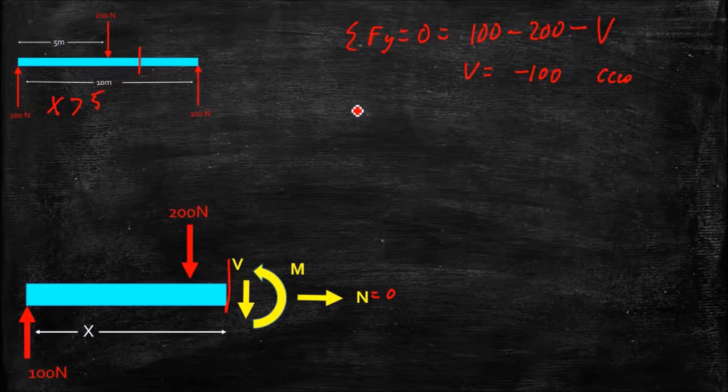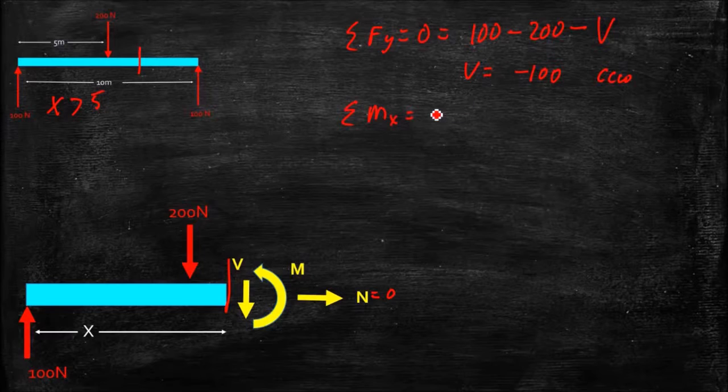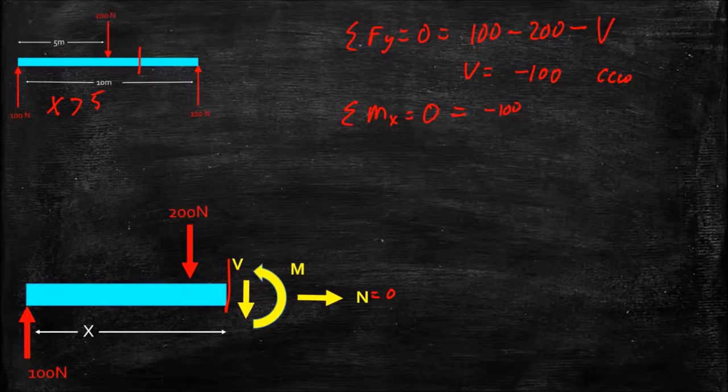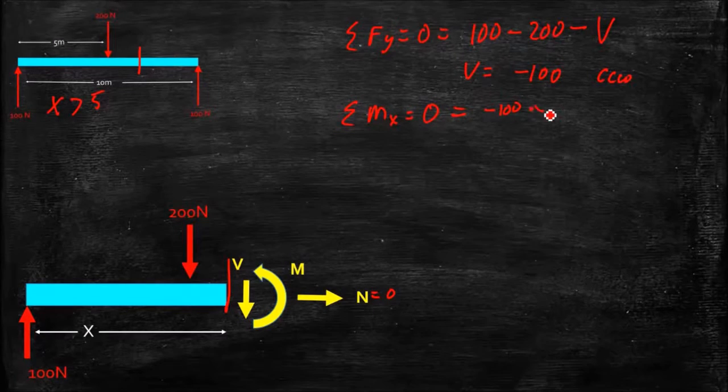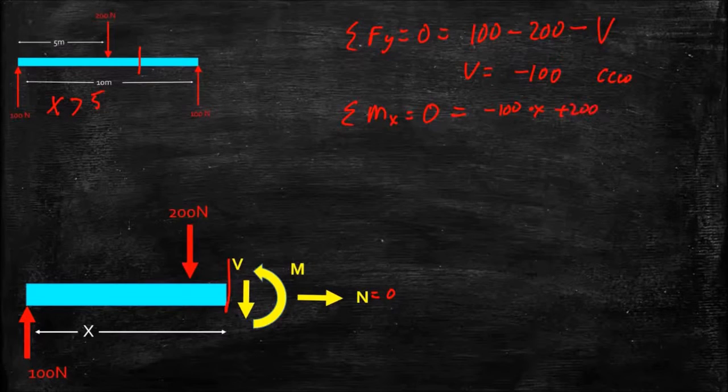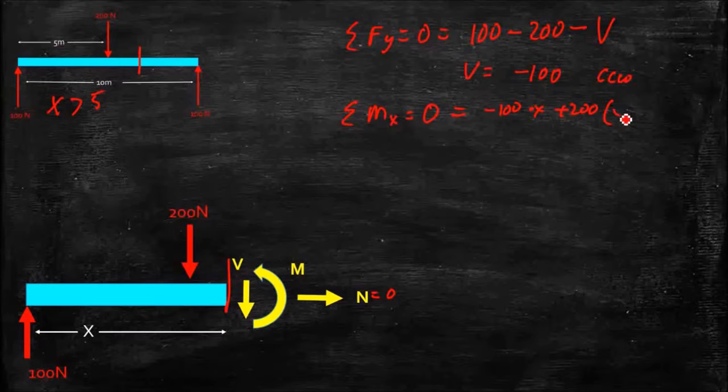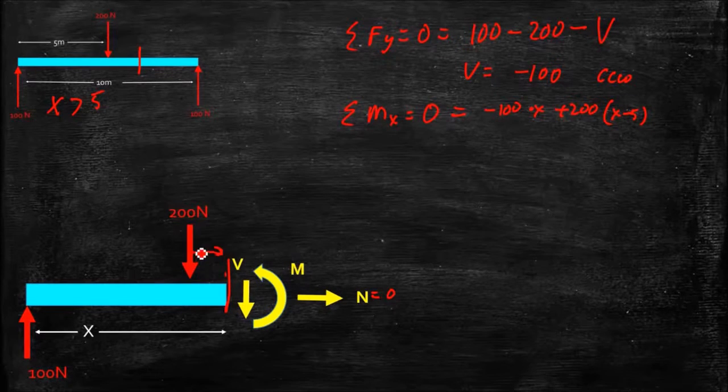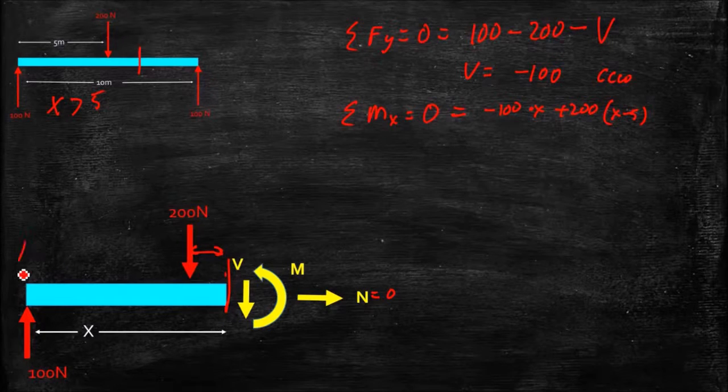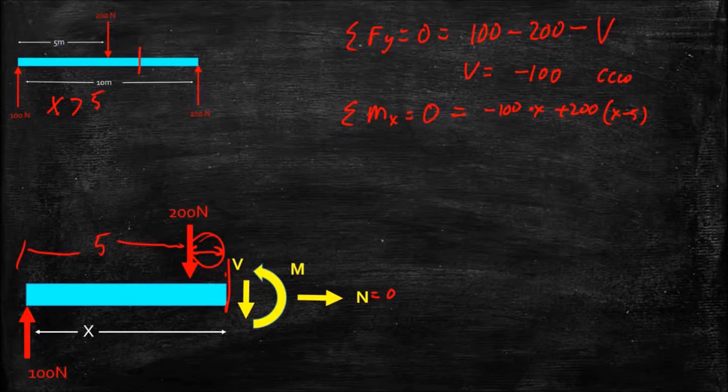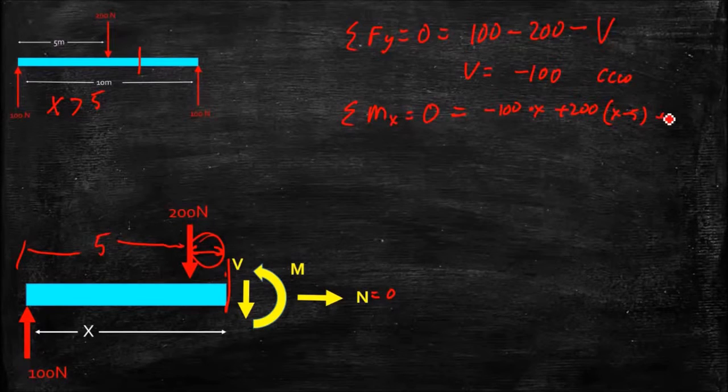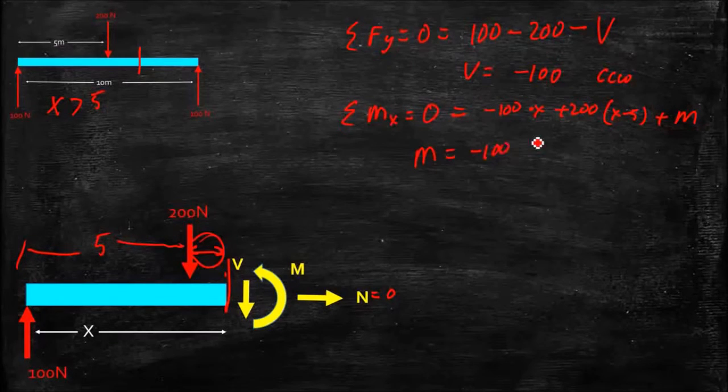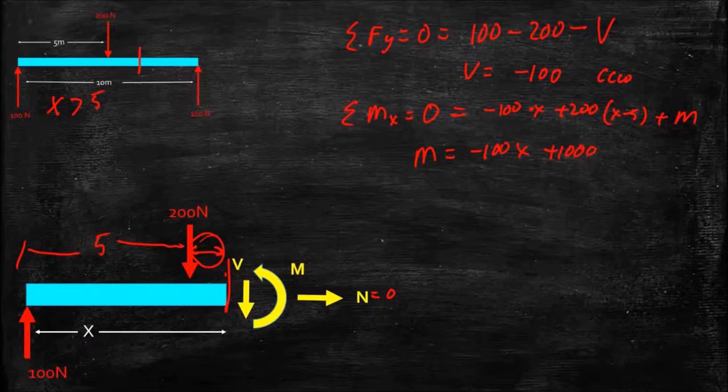Again, take the moments at our section, sum of the moments at x equals zero, and that's equal to our minus 100 times x, then we have plus 200, our applied force times x minus 5, which is the distance from the force to the end. If this is x, this is 5 meters here, and this remainder is x minus 5, plus our moment, we can solve for our moment, is equal to minus 100x plus 1,000 newton meters.